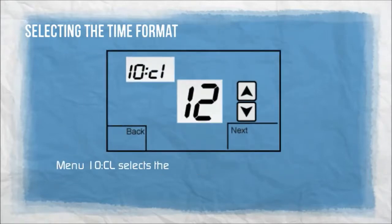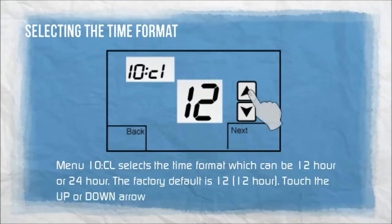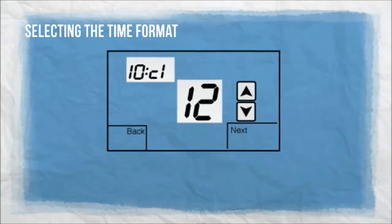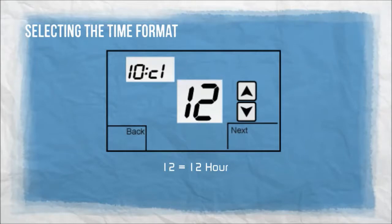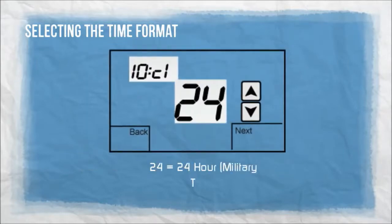Menu 10CL selects the time format, which can be 12-hour or 24-hour. The factory default is 12. Touch the up or down arrows to change the format. 12: 12-hour. 24: 24-hour or military time.